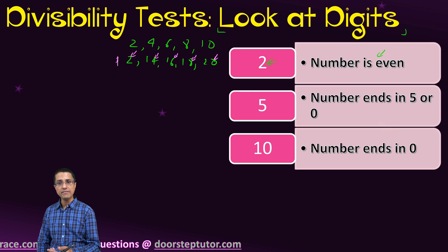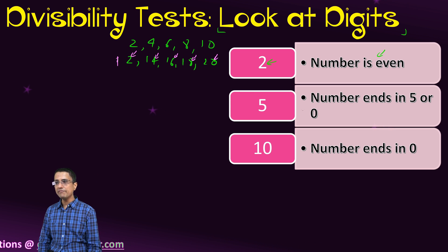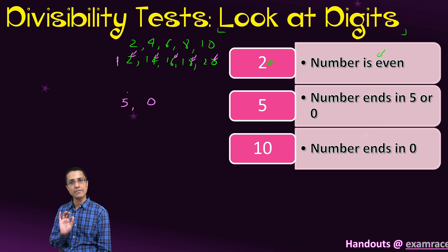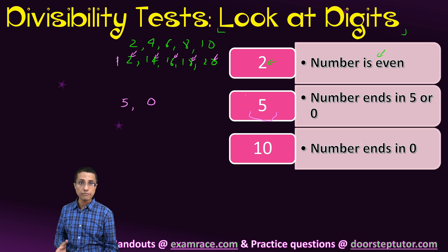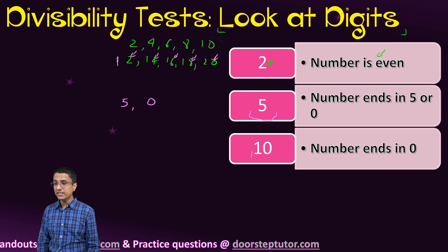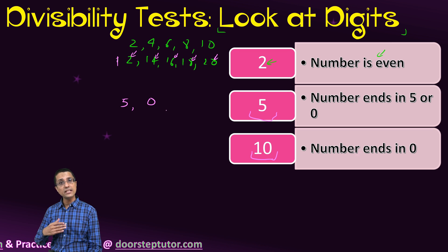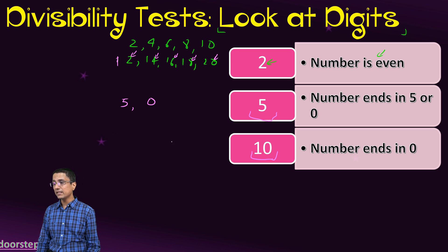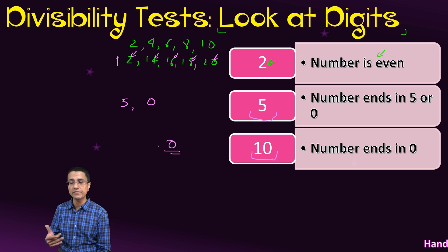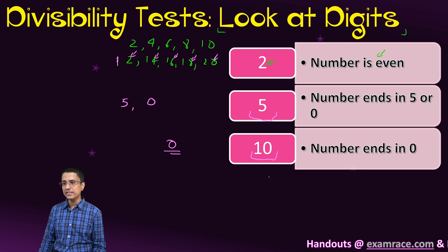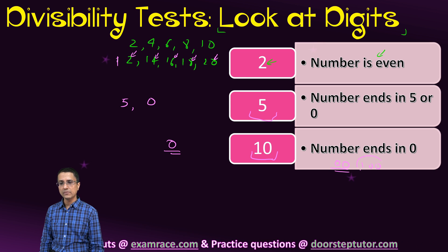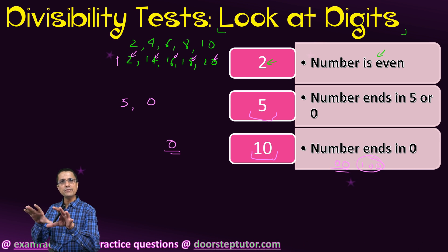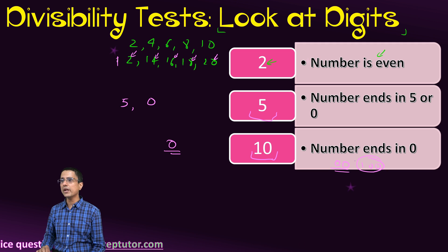For divisibility by 5, numbers are divisible by 5 if they either end in 5 or 0. That is very simple — those are the only 2 kinds of numbers you find in the 5 times table. Divisibility by 10 is also very simple: the only numbers divisible by 10 are those which end in 0. Divisibility by 100 is also simple: numbers must end in 2 zeros.